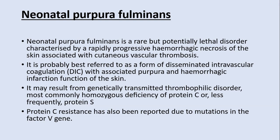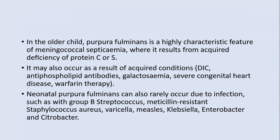It may result from genetically transmitted thrombophilic disorders, most commonly homozygous deficiency of protein C or, less frequently, protein S. Protein C resistance has also been reported due to mutation in the factor V gene. In older children, purpura fulminans is a characteristic feature of meningococcal septicemia, where it results from acquired deficiency of protein C and S. It may also occur due to acquired conditions like antiphospholipid syndrome, galactosemia, severe congenital heart disease, or warfarin therapy, which depletes protein C and S.